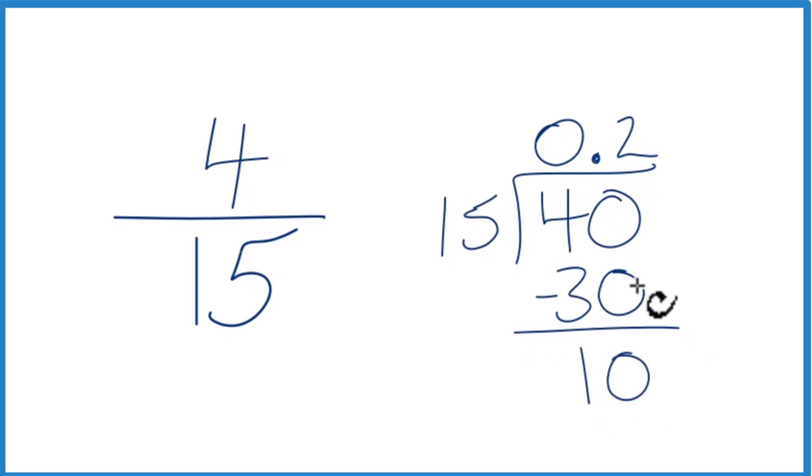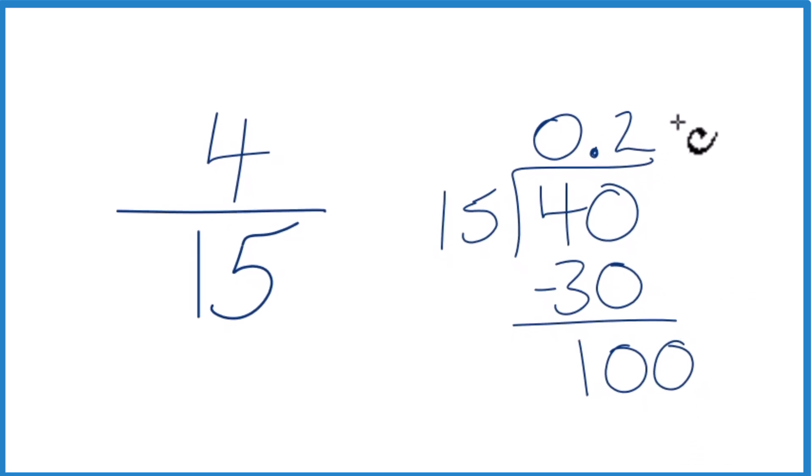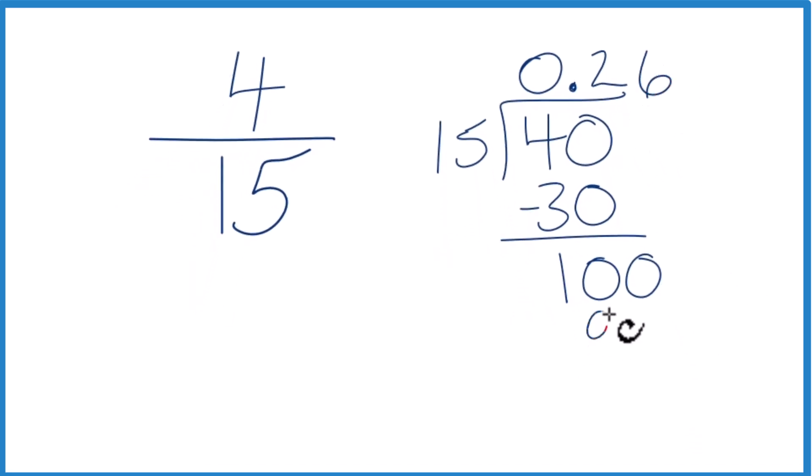15 doesn't go into 10, so we're going to call this 100 and move over 1 decimal place. 6 times 15, that's 90. And we subtract, we get 10.